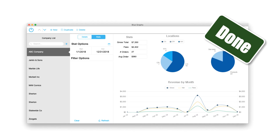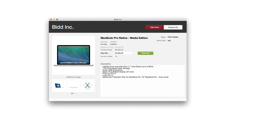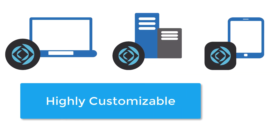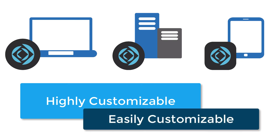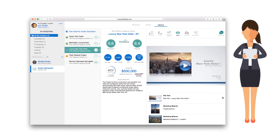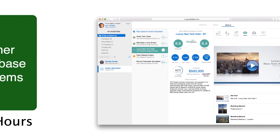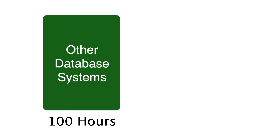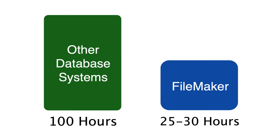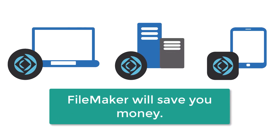The FileMaker platform has the ability to build both simple and complex custom applications. It's extremely powerful. The true benefit of the FileMaker platform is that it is highly and easily customizable to your needs. A typical database system that an IT organization might build for you might come with a quote of 100 hours of labor. My experience shows that you can solve the same kind of problem with a FileMaker custom app with only about 25 or 30 hours of labor — that's a dramatic savings.